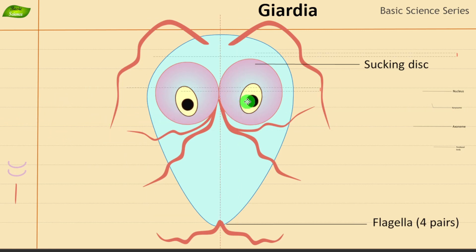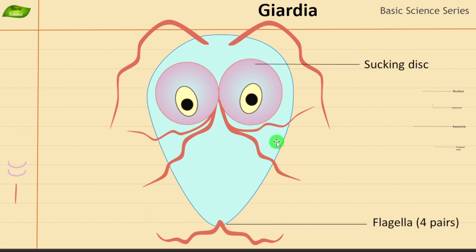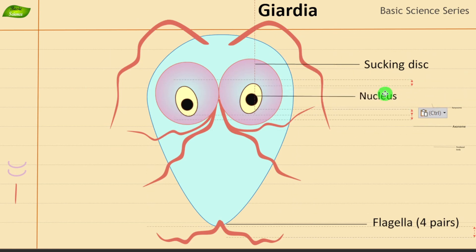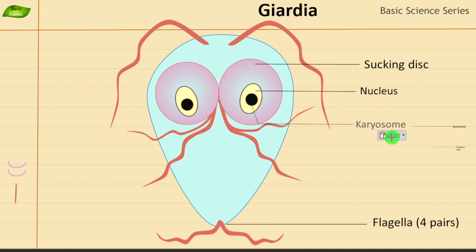With the two nuclei added to the illustration, it really does look like a human face. These two key structures are the nucleus and the karyosome present in the center of the nucleus. Let me label these — this is the nucleus, and next is the karyosome present in the center.